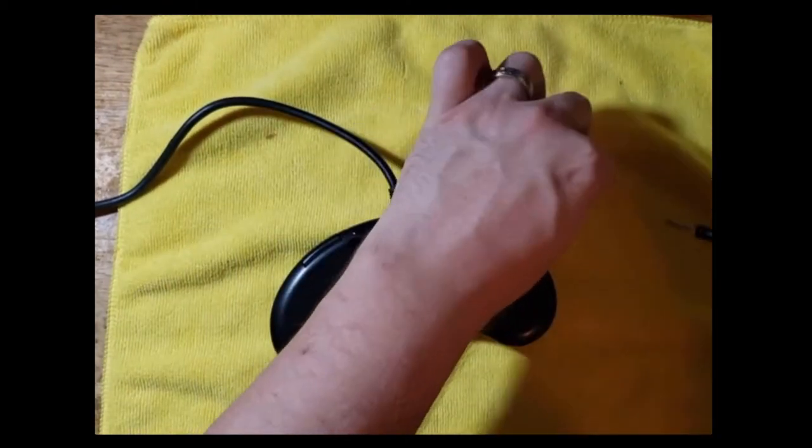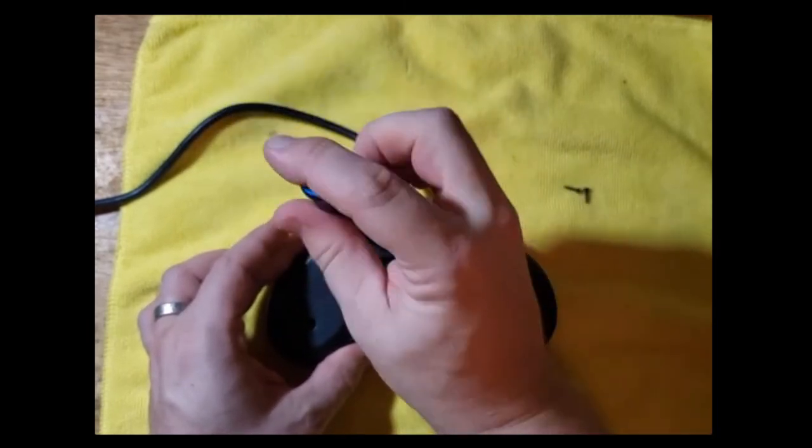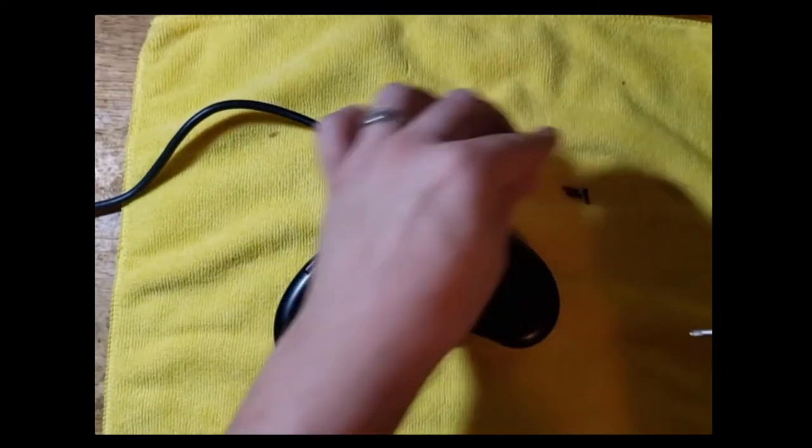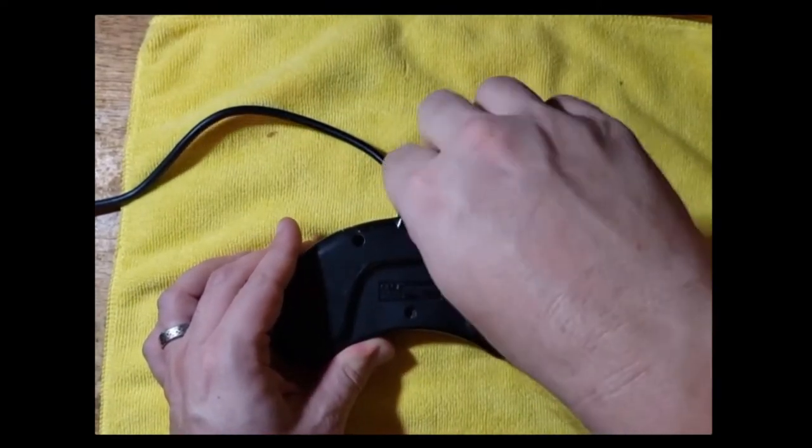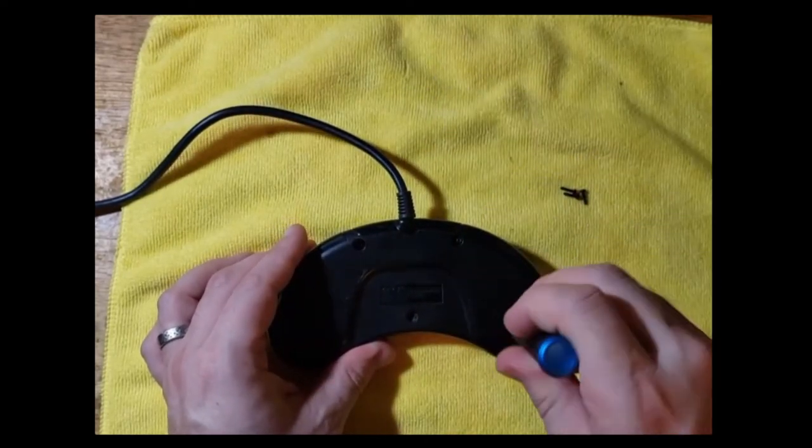As with most of the Sega controllers, I find that they're actually pretty easy to get the screws out of. A lot of the Nintendo controllers, the screws are so sunk into the controller that it can be a little difficult to get them out until after they're unscrewed. The Nintendo is really bad about that.